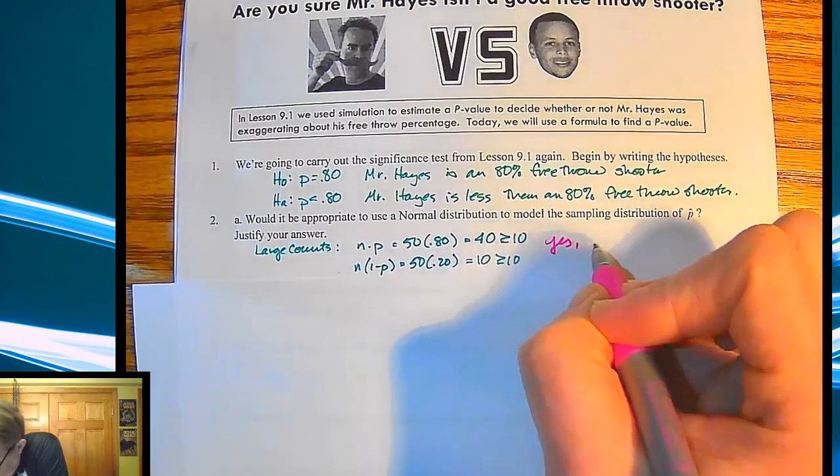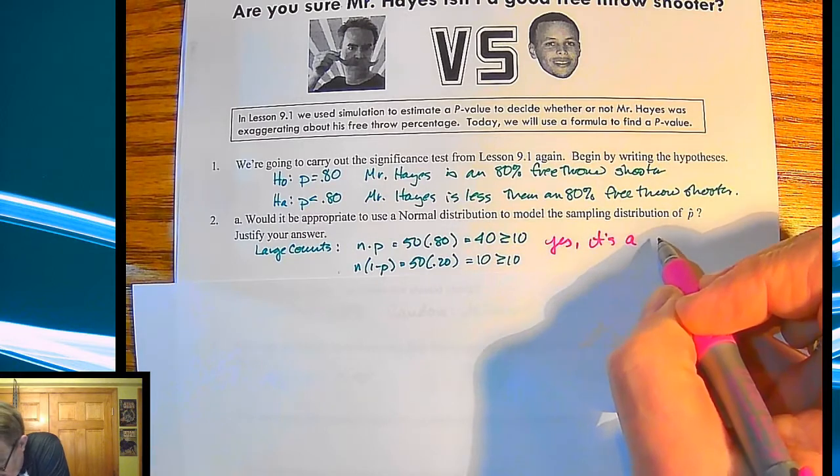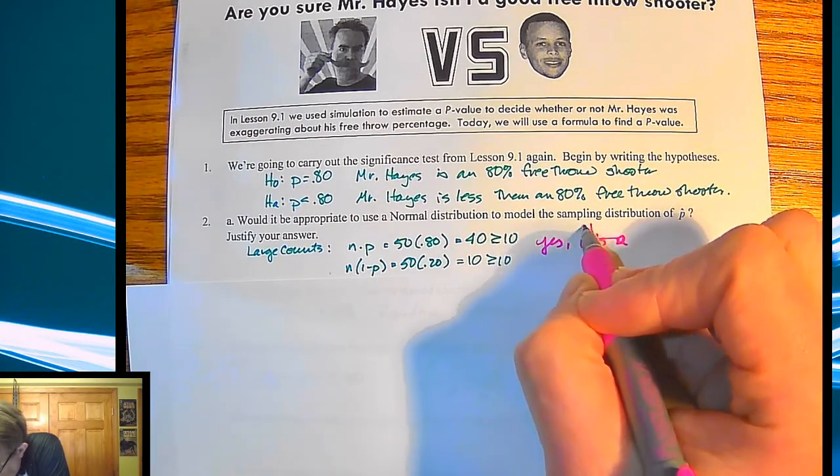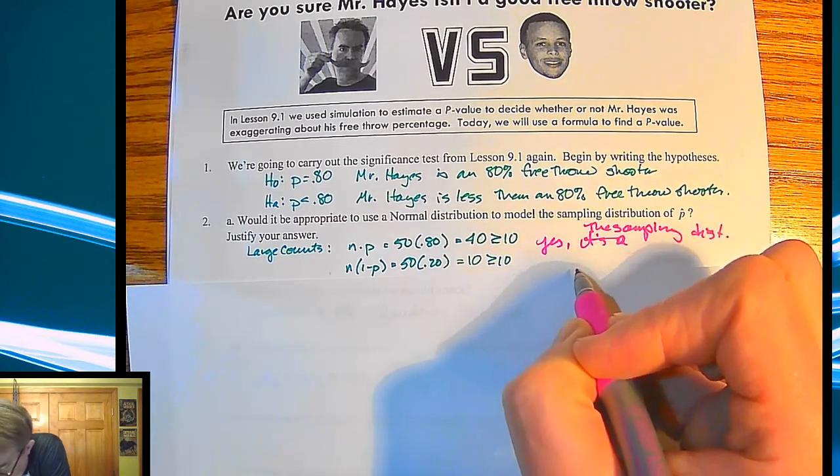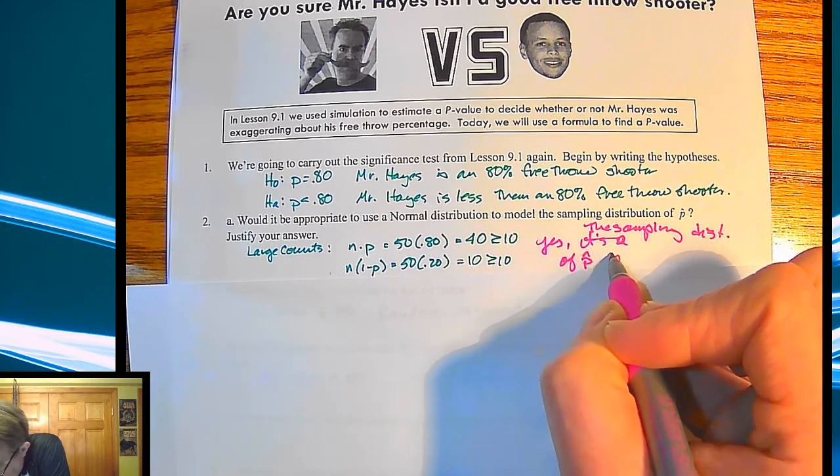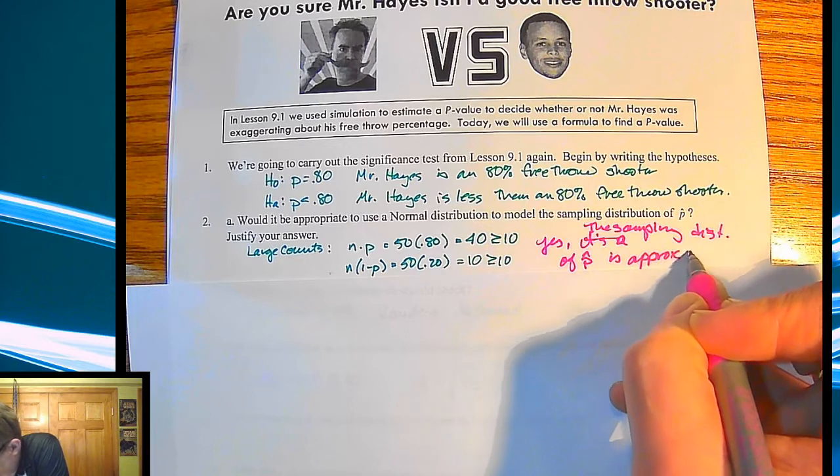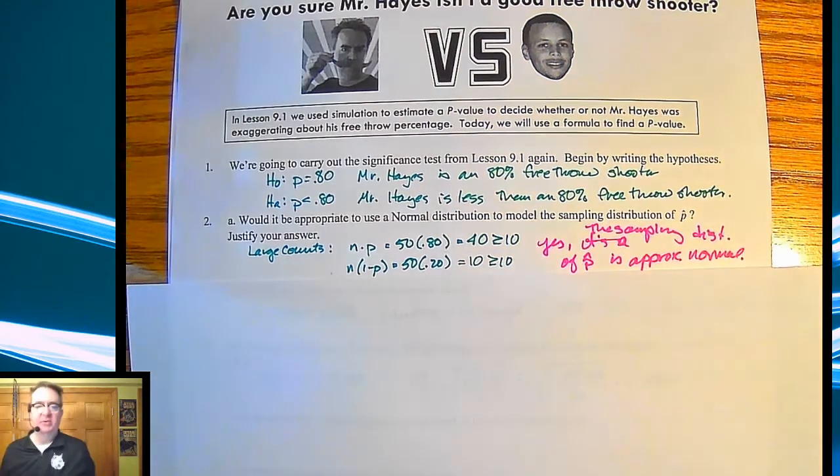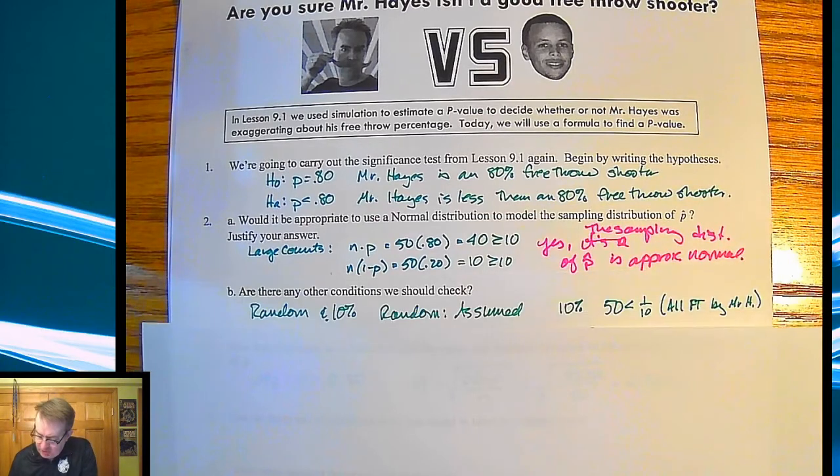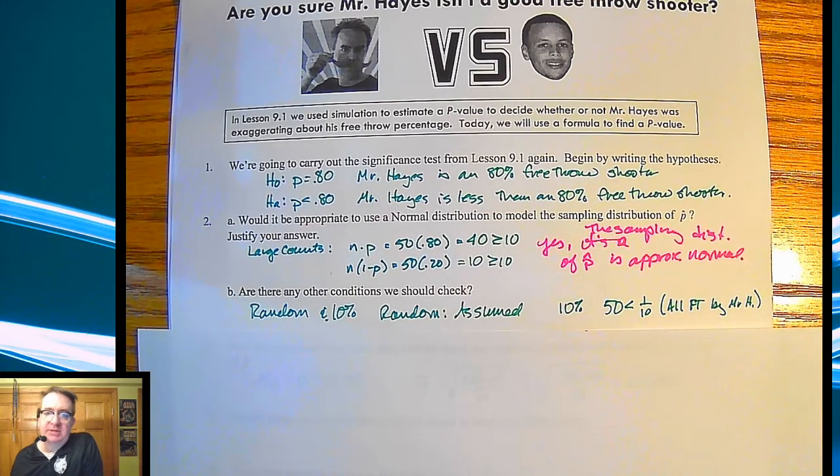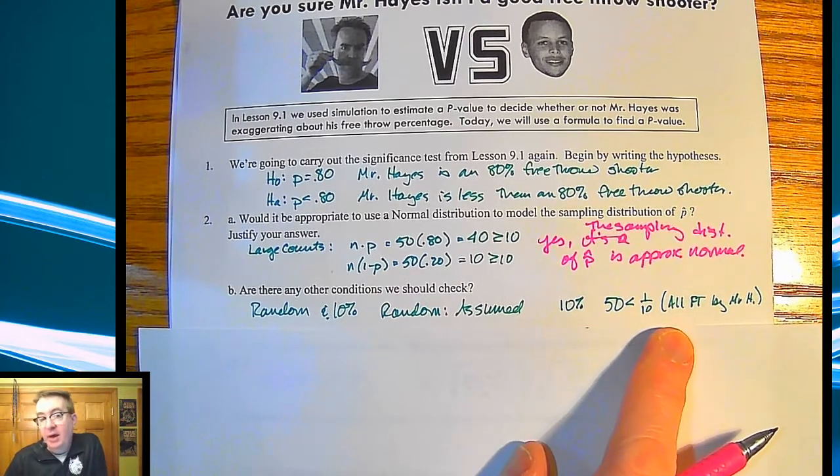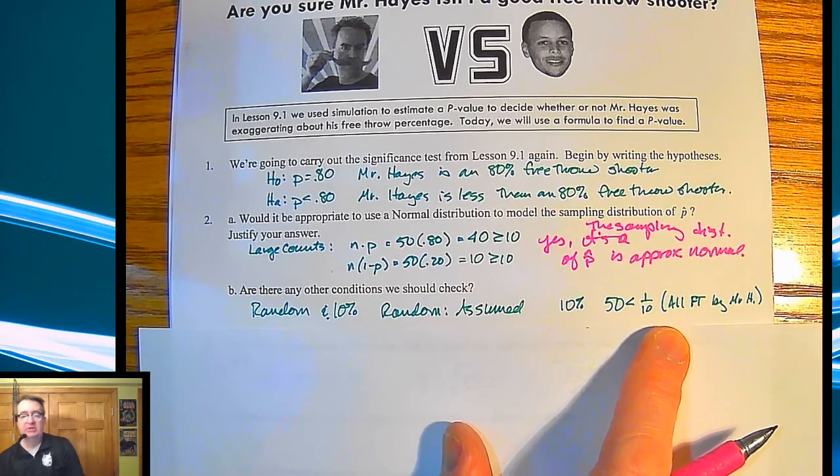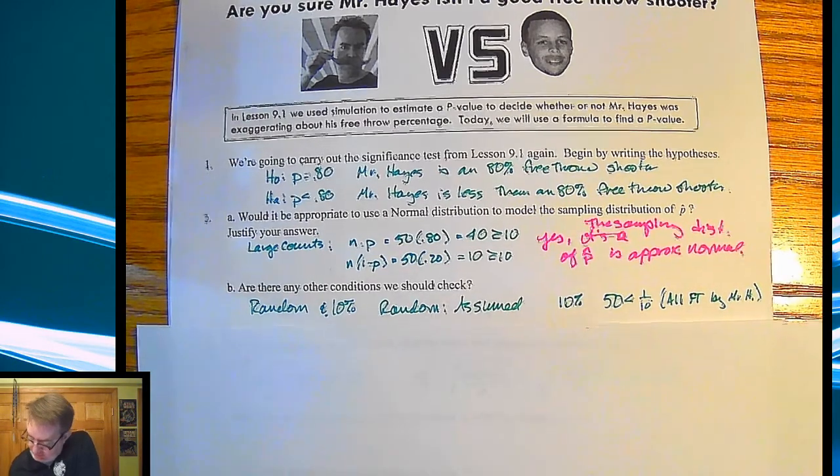So yes, the sampling distribution of p-hat is approximately normal. Always good to answer the question, right? What other conditions should we check? Obviously, randomness, because that we can extend it off to all of my shots. And then the 10% condition over here as well. And that's going to allow us to do what? Good. I knew you had that. So anyway, 50 is bigger than all potential free throws that I'm taking.